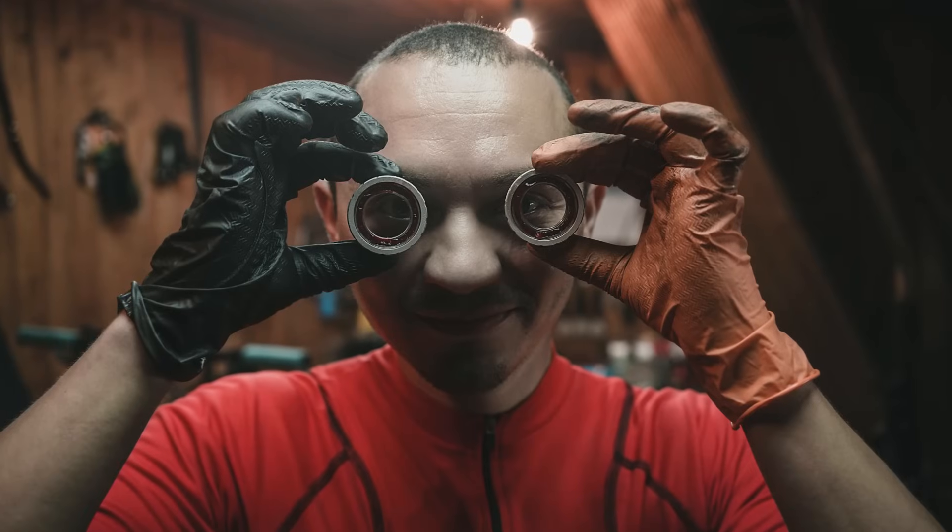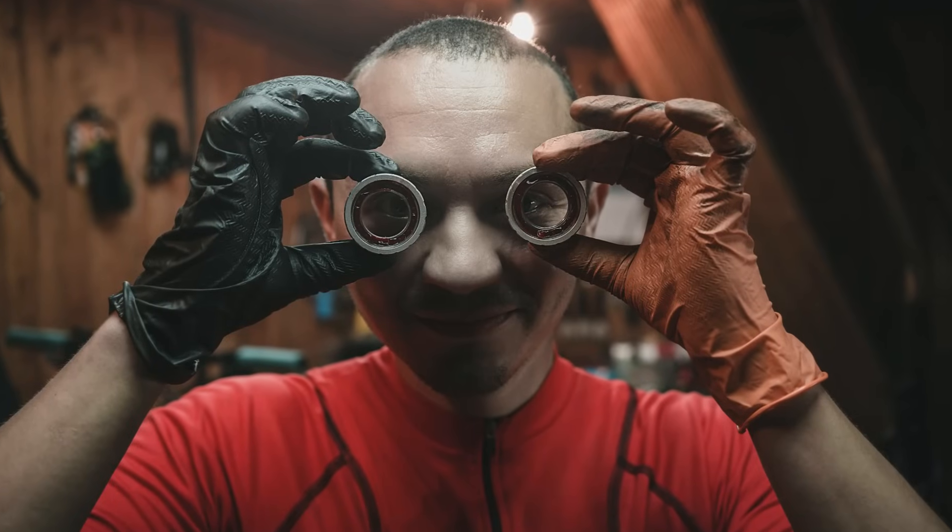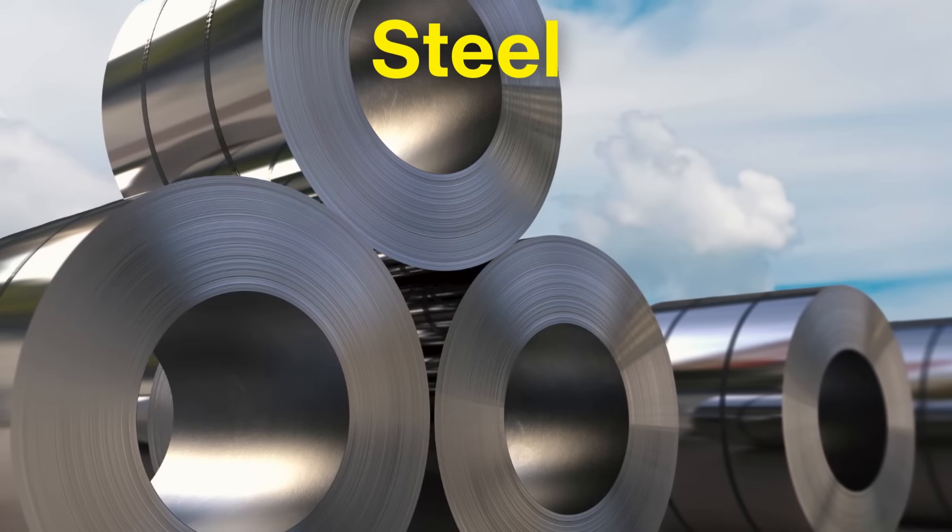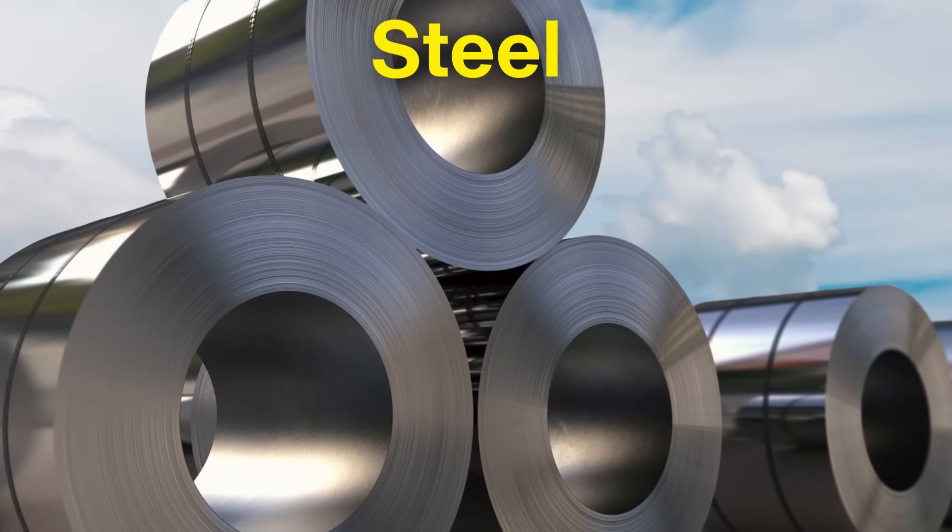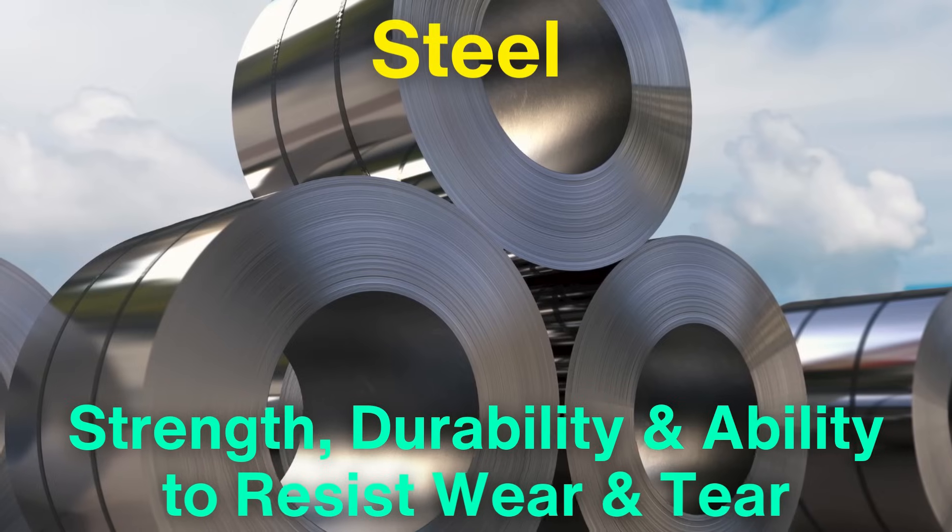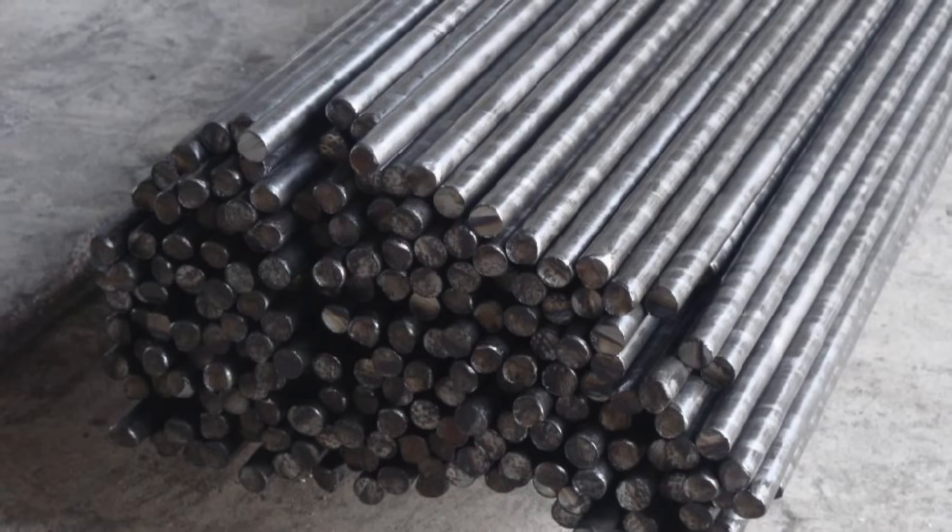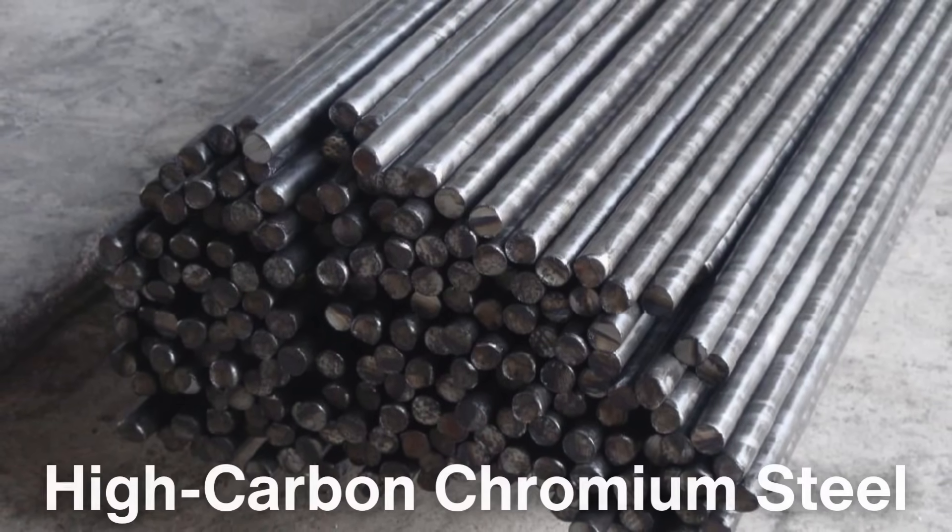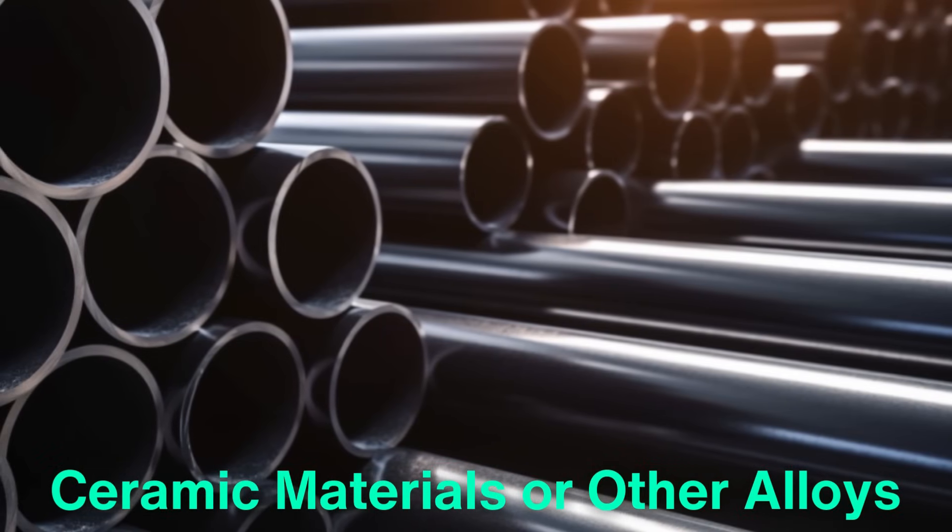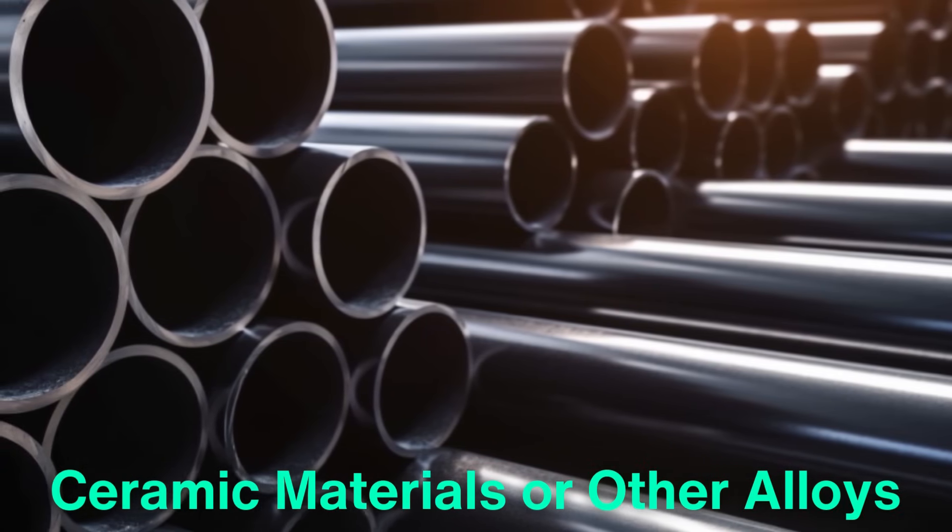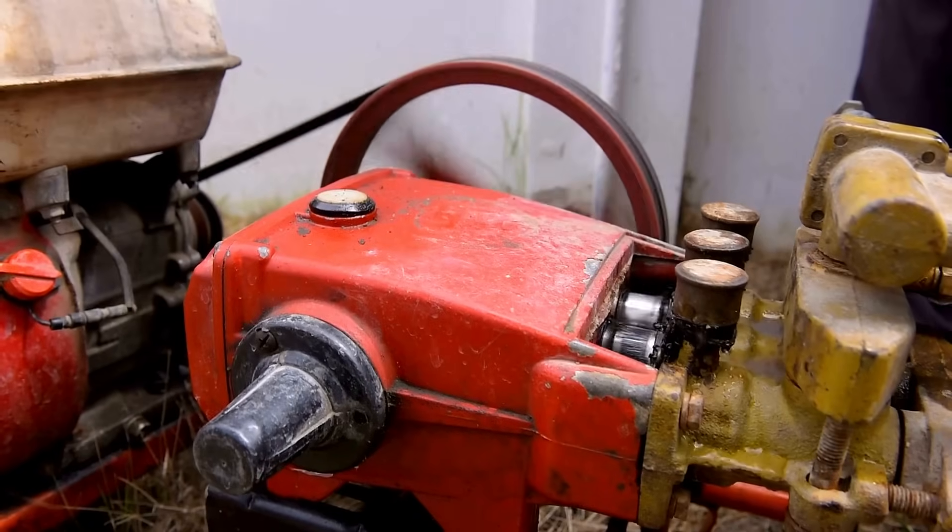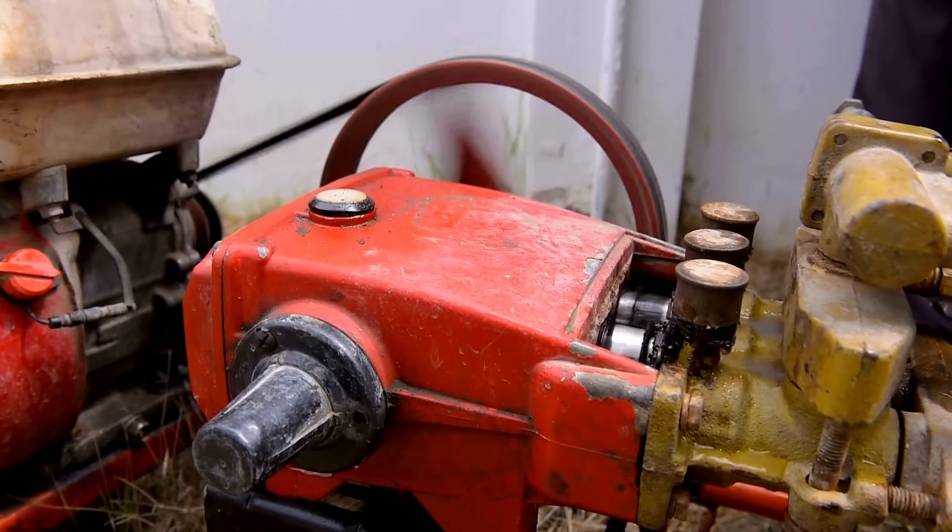Now, let's talk about how ball bearings are made. The process begins with the raw materials. Steel is the primary material used in manufacturing ball bearings due to its strength, durability, and ability to resist wear and tear. The most common type of steel used for ball bearings is high-carbon chromium steel. In some cases, ceramic materials or other alloys are used for specific applications requiring higher performance, like in high-speed machinery or where high temperatures are involved.